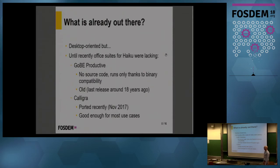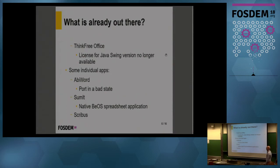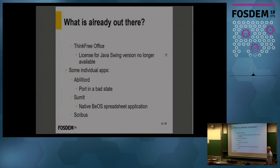Calligra was ported recently along with KDE frameworks — this was very recent, ported in November 2017. It's good enough for most use cases, but it doesn't have as many features as LibreOffice. Another office suite is ThinkFree Office, and it was running thanks to OpenJDK — it was Swing-based — but they no longer sell licenses for that, so it's not really an option anymore. Some individual apps: there was an AbiWord port, but it was actually in the same state as my LibreOffice port — not really usable. There is Sum-It, a spreadsheet application written for BeOS, and there is Scribus, which is a Qt application. We also have a Qt toolkit ported, so any Qt application can work on Haiku as well.